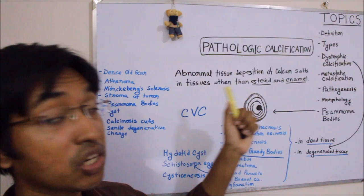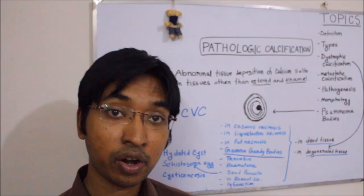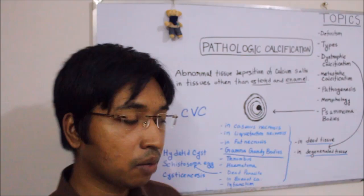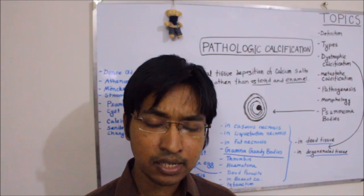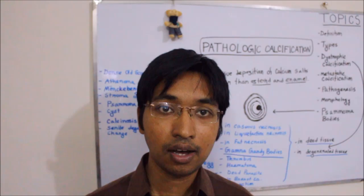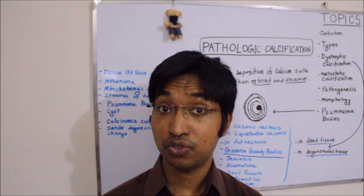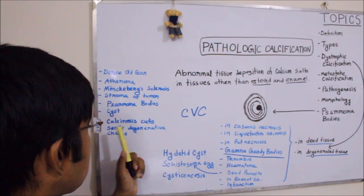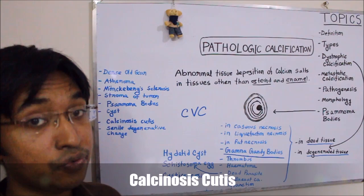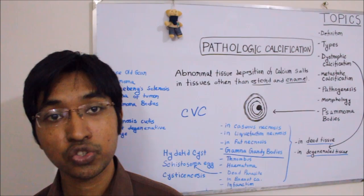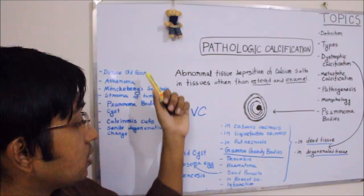Dystrophic calcification can also happen in cysts. When a cyst has been present for a prolonged period of time, the walls of the cyst can undergo dystrophic calcification. In old age, some cartilages undergo dystrophic calcification — for example, the costal cartilage and also the cartilage of the trachea and bronchi undergo dystrophic calcification following degenerative change. Such dystrophic calcification can also happen in the pineal gland in old age. Additionally, calcinosis cutis refers to dystrophic calcification in the skin and subcutaneous tissue in an irregular and nodular fashion, though the exact etiology is unknown in most cases.